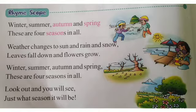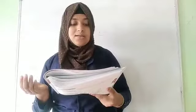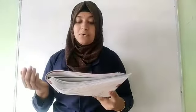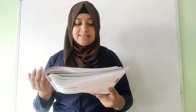Look out and you will see just what season it will be. Winter, summer, autumn and spring. These are four seasons in all. Look out and you will see just what season it will be. Winter, summer, autumn and spring. These are four seasons in all.